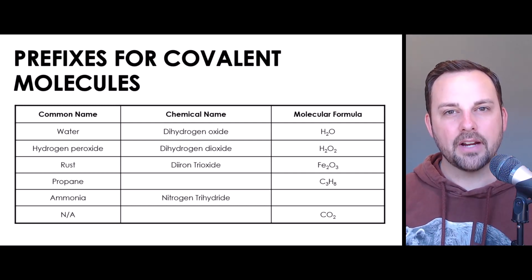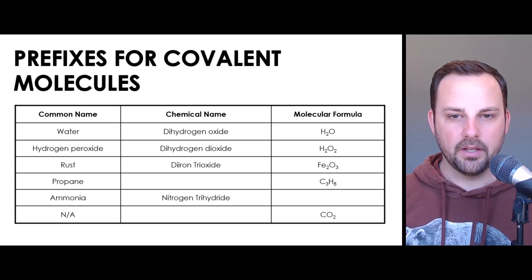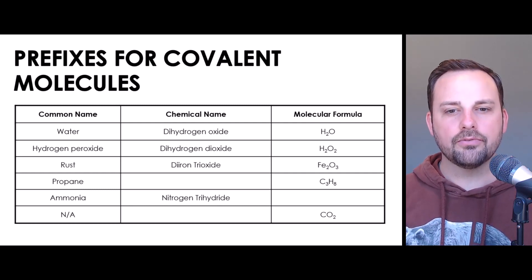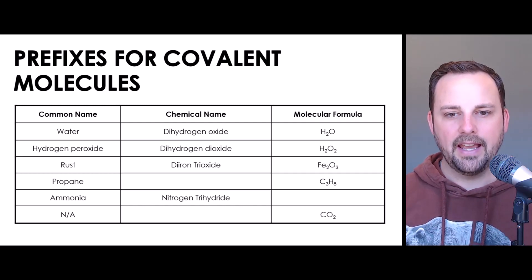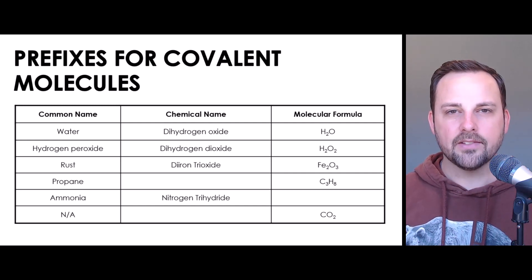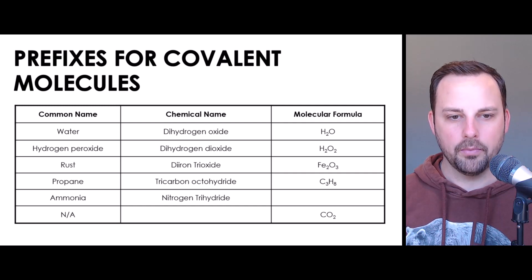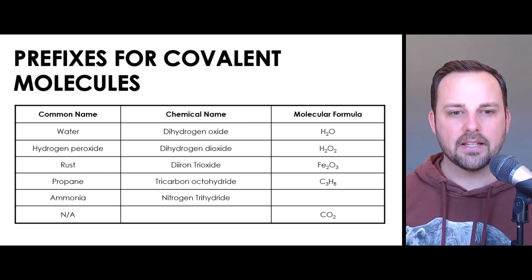Now let's look at another common substance you might have around your home: propane. I've given you the molecular formula for propane. You can see in the molecular formula that there are three carbon atoms and eight hydrogen atoms. So based on that information, how would we name propane? Since there are three carbon atoms we would call it tricarbon, and since there are eight hydrogen atoms we would call it octahydride. So the chemical name is tricarbon octahydride. Tri means three, indicating three carbon atoms, and octa means eight, indicating eight hydrogen atoms.